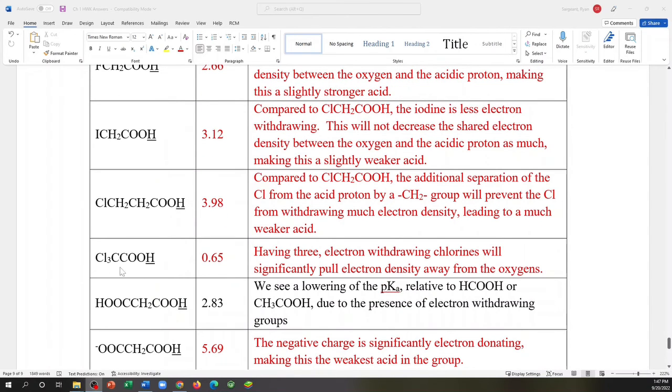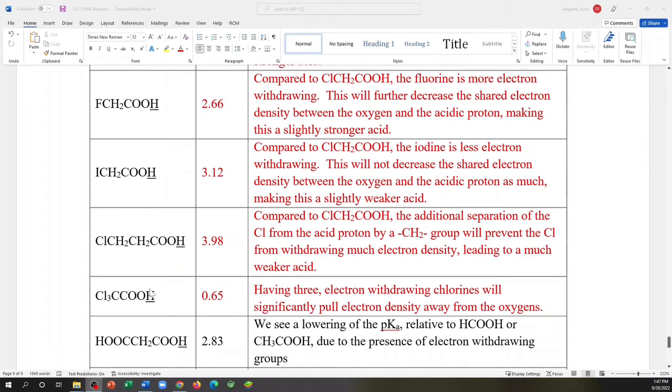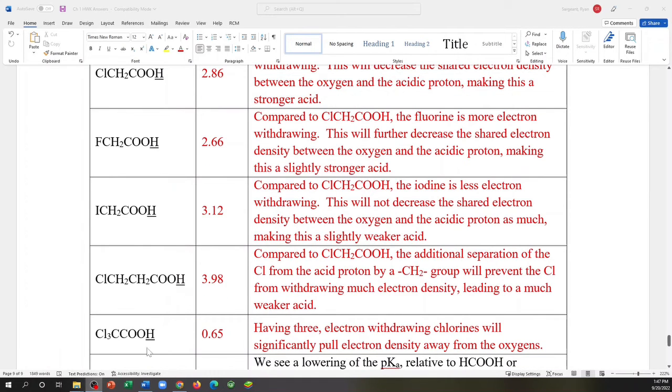Now let's look at the most extreme case. And this is a case where we put three chlorines on there. You should absolutely identify that this compound here is more acidic than the one that just has one chlorine. Now, knowing that three chlorines has a larger impact than a single fluorine is a lot to ask. And I wouldn't feel great about giving this to you on an exam.